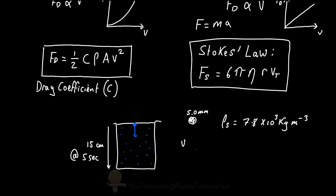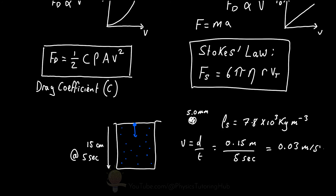The density of the steel ball bearing is 7.8 × 10³ kilograms per metre cubed. We are using Stokes' Law because the particle is relatively small, moving slowly, and moving through a medium denser than air. Terminal velocity happens quickly for particles in liquids, so we can accurately estimate terminal velocity by measuring the average velocity of the particle falling through the fluid.